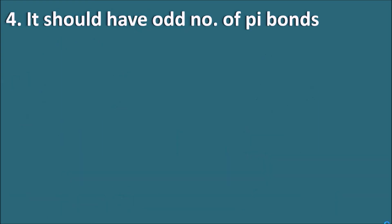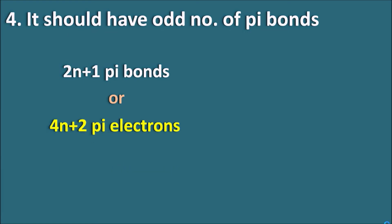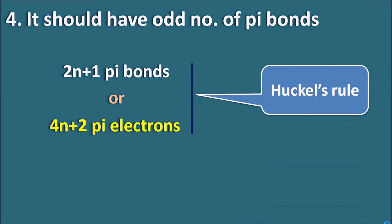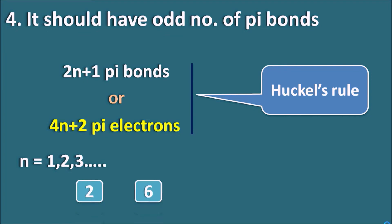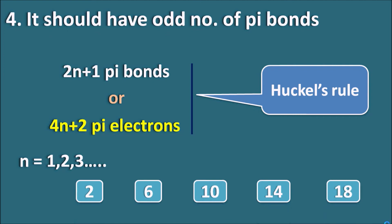Fourth criteria: the compound should have an odd number of pi bonds, i.e., 4n+2 pi electrons (since each pi bond has two electrons). This is commonly known as Hückel's rule. Substituting n = 0, 1, 2, 3… gives 2, 6, 10, 14, 18 pi electrons as allowed values for aromaticity. The value 2 (n=0) is not observed in nature, so aromatic compounds are observed with 6, 10, 14, 18 pi electrons and so on.